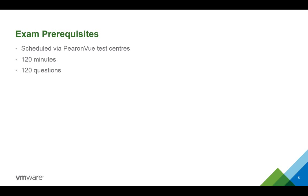Usually you can read each question within 10 to 15 seconds and then have a 45-second span to answer them. Normally in the VCP you can also jump around questions at the end — you can mark questions for review and then jump back to them. Ross has confirmed you can mark questions for review on this exam as well.